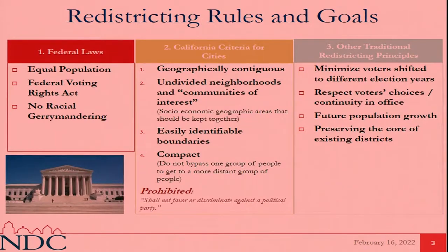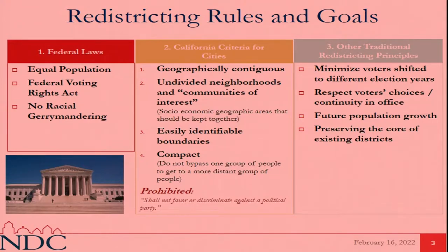I've gone over these criteria quite a bit in the past, so I'm not going to dwell on them too much — only to emphasize that you have the federal laws with those three requirements from Congress or the Supreme Court. You have the California criteria from the new Fair Maps Act, which is rank order of priority. The most important ones are at the top; ideally you'd want to satisfy all of those but prioritize the higher order ones. On the right-hand side are other traditional redistricting principles that you may or may not want to consider.